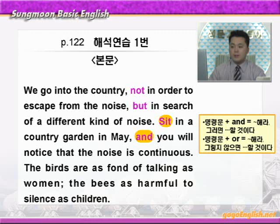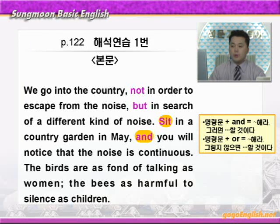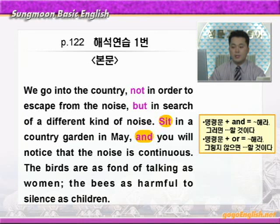'sit in a country garden in May.' 5월에 시골 정원에 앉아보라. 'and you will notice that' — notice는 타동사로 '뭐뭐를 알아차리다' 이런 뜻이니까 너는 that 이하를 알아차리게 될 것이다. 'the noise is continuous.' continuous는 끊임없는, 연속적인 이런 뜻이니까 그 소음이 끊임없다는 것을, 다시 말해 끊임없이 소음이 나는 것을 알게 될 것이다.